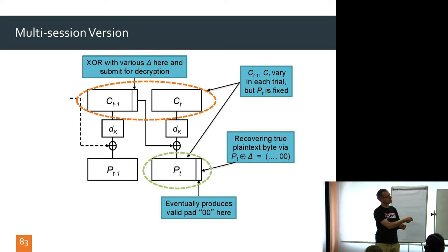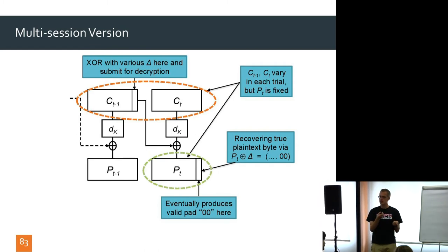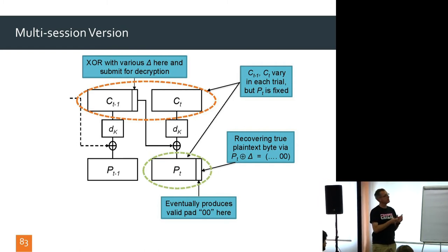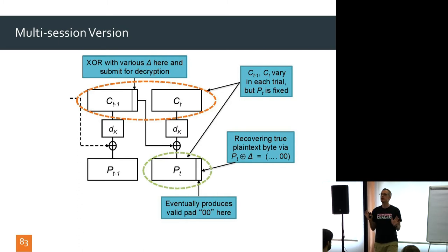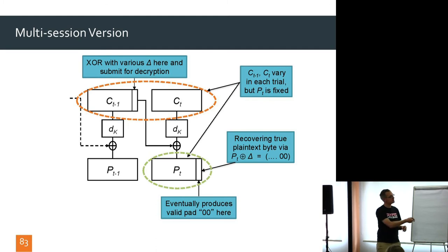The key insight is that even though the ciphertext blocks and keys change every session, the plaintext is fixed. So the attack works. You try delta values 0x00 through 0xFF across sessions. Each session you try a different delta, and the XOR structure does the right thing regardless of the changing key. The attack is essentially key-independent — it only cares about the XOR structure and the fixed plaintext.